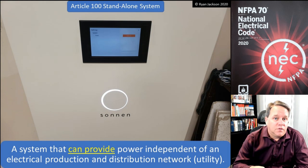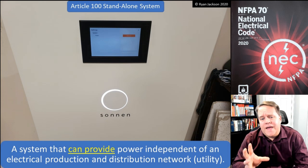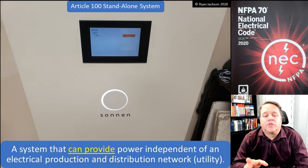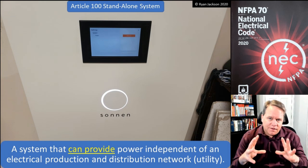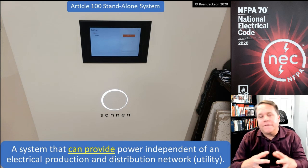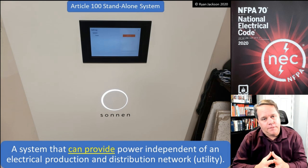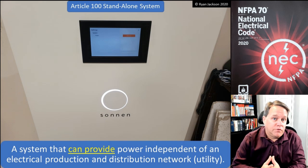A standalone system is a system that can provide power independent of an electrical production and distribution network. I'm going to be perfectly honest here — this definition needs some work, and they're going to fix this in the 2023 code.